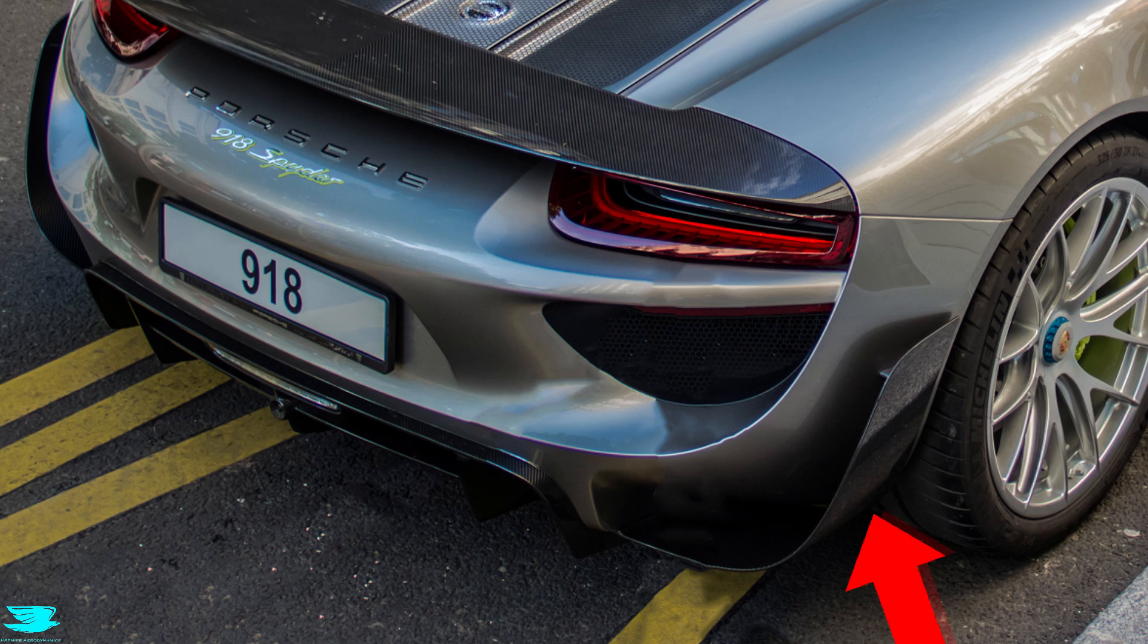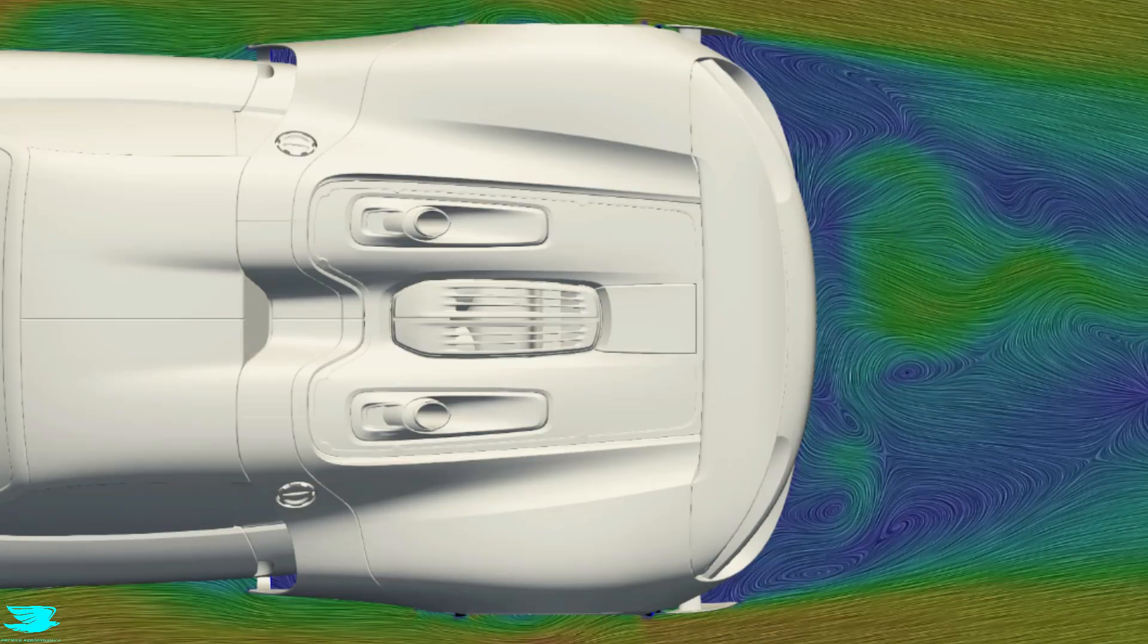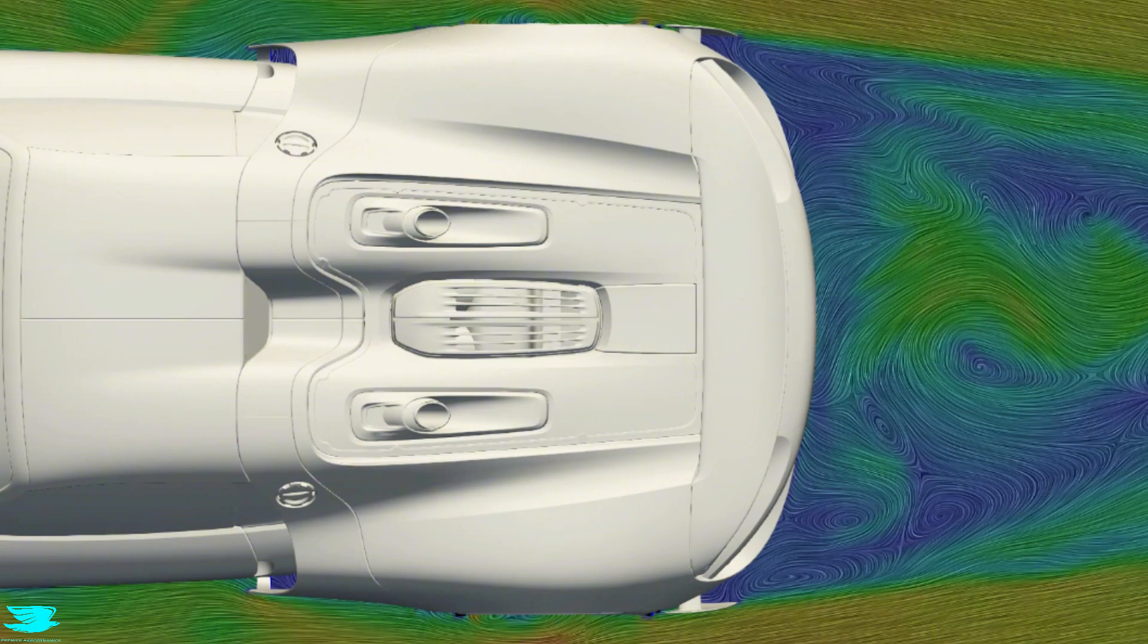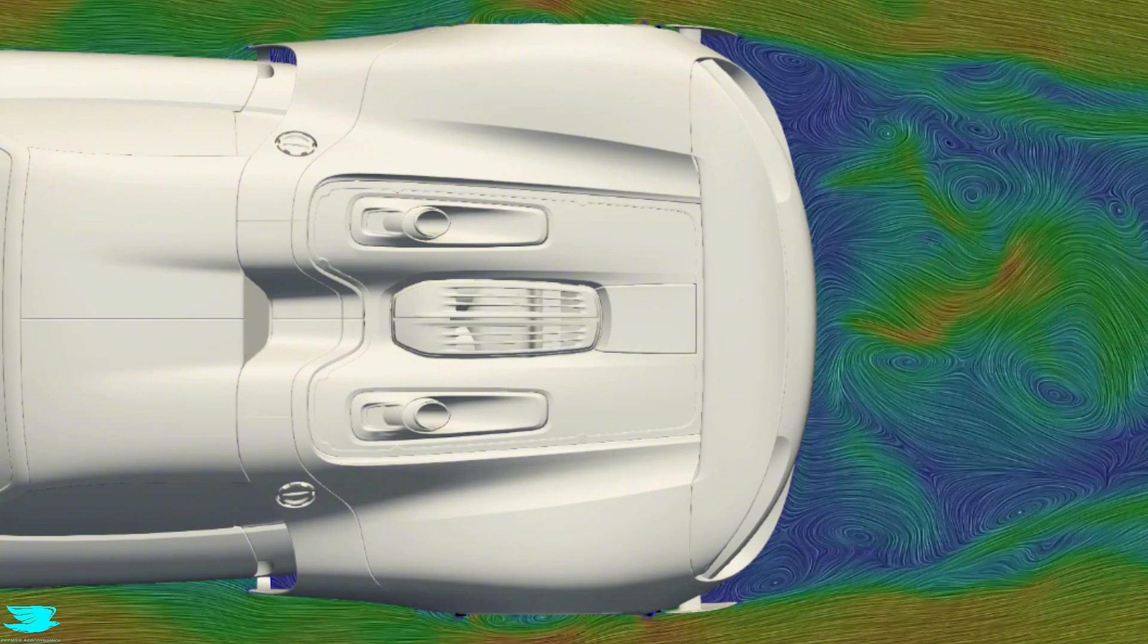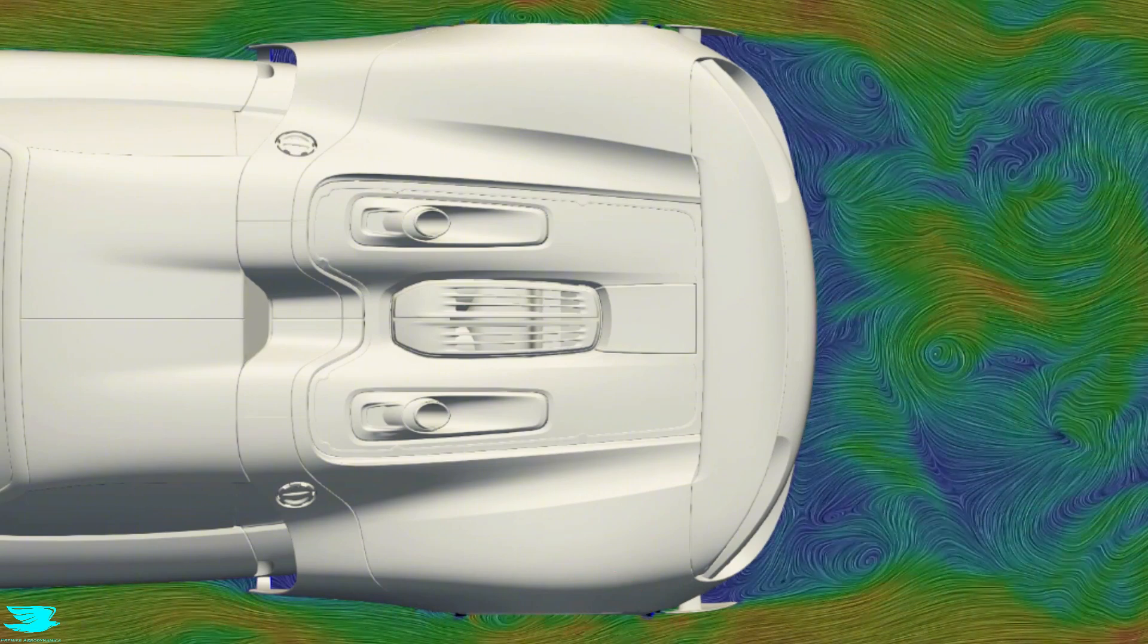Now, the rear edge extensions, how do they work? Well, their main role is to create a crisp edge for the flow to detach from, and it really works. Look how the flow goes along and then immediately separates there.